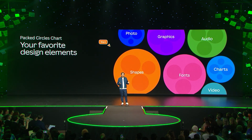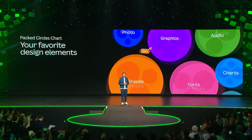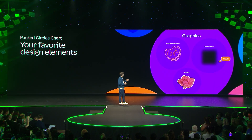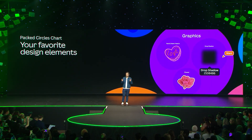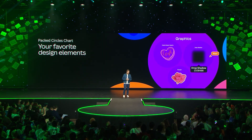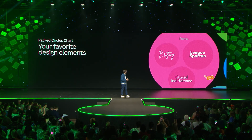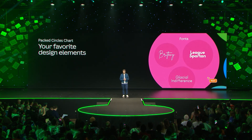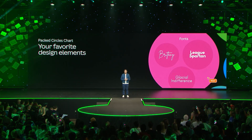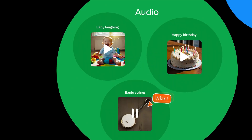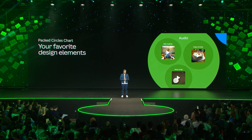But what elements are you adding to all these designs? Just for fun, we thought we'd look it up. Your top three most loved graphics are currently a flower, hand-drawn hearts, and drop shadows. In fact, you've searched for drop shadows so many times that we've built it into Canva as a feature. Your most popular fonts: the beautiful Gothic League Spartan, curly Brittany, and the strangely named Glacial Indifference, which sounds like one you could take or leave. And your most used audio sounds: a baby chuckling, banjo strings, and happy birthday. Sounds like a hell of a party.